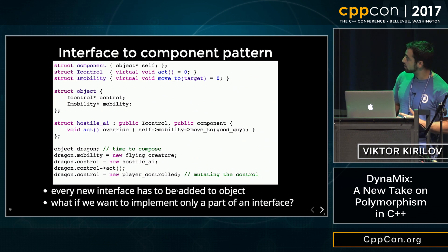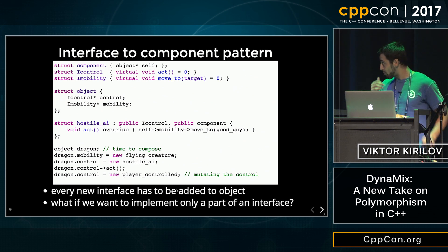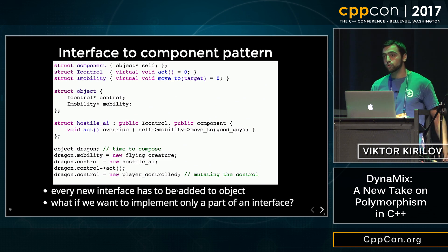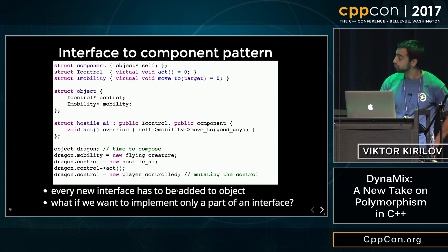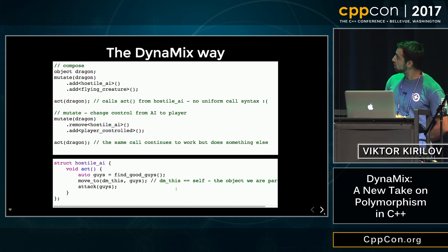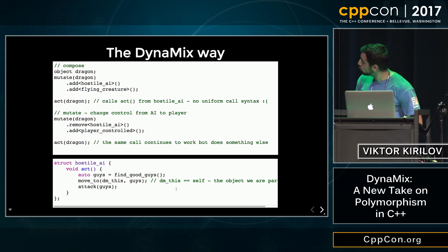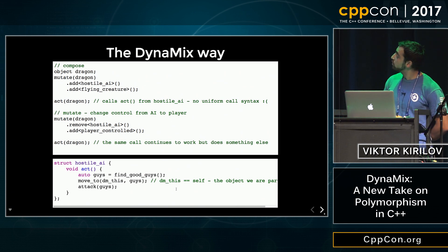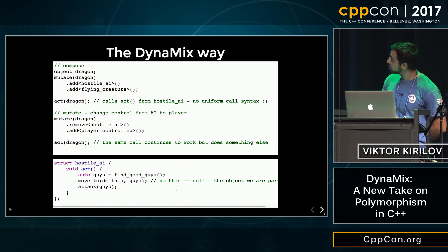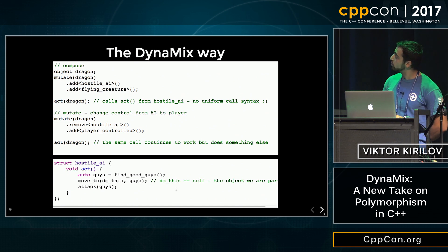But here, each new interface has to be added as a pointer to the object class. And also, what happens if we want to implement an interface partially? So, with Dynamics, we make a dragon object and we mutate it by adding the hostile AI and the flying creature components. Then we call act on it. Then we can mutate it again by removing the hostile AI component and adding the player control component. When we call act on the dragon, we actually call act from the player component class.